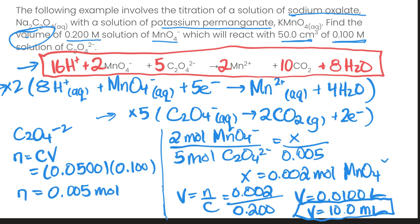So it doesn't take too many steps, very similar to a typical stoichiometry problem. The big thing here that you need to pay attention to is balancing the redox reaction. Once you have that, the rest of the steps are pretty easy. That's it for this video then, let's move on to our next task.